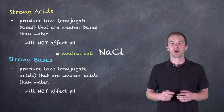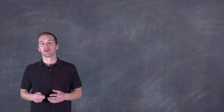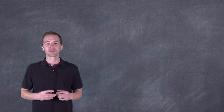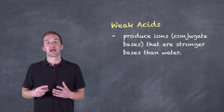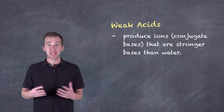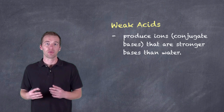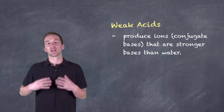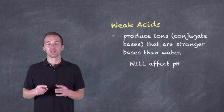Up until this point, sodium chloride has been one of the most common salts we've dealt with in neutralization reactions, and it's true — it doesn't affect the pH. But let's take a look at some scenarios that might, and these involve weak acids and weak bases. The difference with weak acids is that they produce ions — that is, conjugate bases — that are stronger bases than water. Water autoionizes and produces hydroxide ions, so the conjugate base produces a greater concentration of hydroxide ions than water would on its own, and therefore it will affect the pH of our solution.